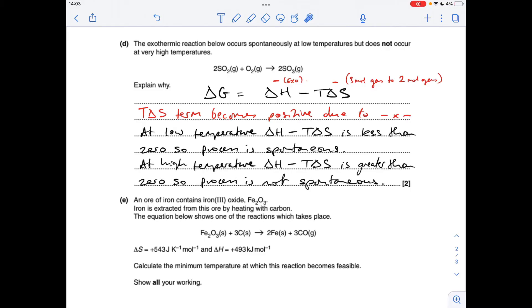And then if we just flip that argument, at high temperatures this term is going to be greater. Remember, it's positive because of the two minus signs. So when you combine this with the negative ΔH, it's actually going to end up making ΔG greater than zero, and so the process is not spontaneous.